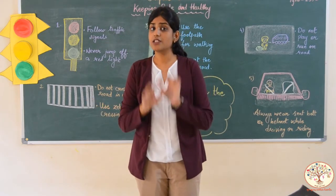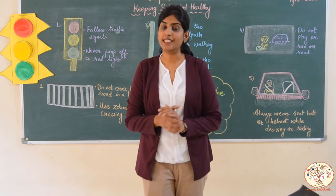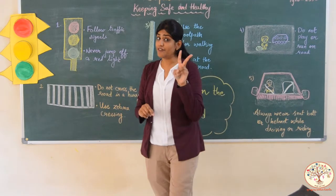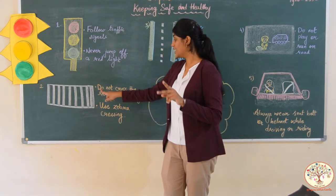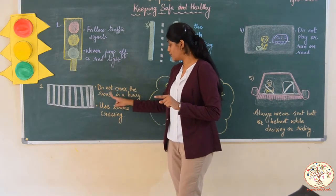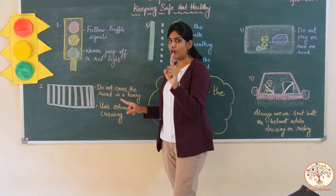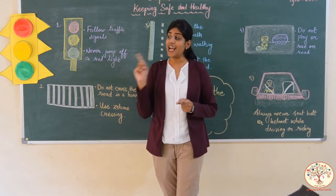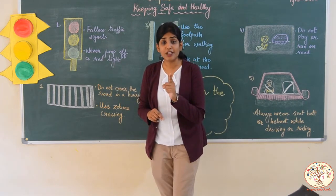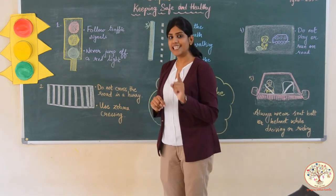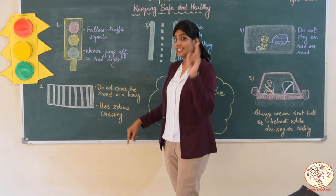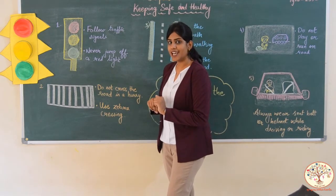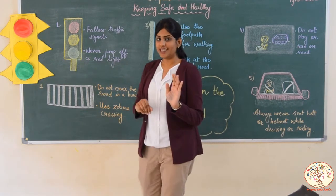And if there are vehicles, we should wait to let them pass. So the second safety rule on the road is: do not cross the road in a hurry. Always look right, then left, then right again, and cross only if the road is clear. And use zebra crossing for crossing the road.